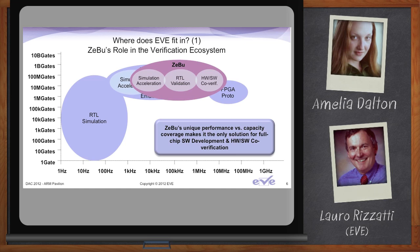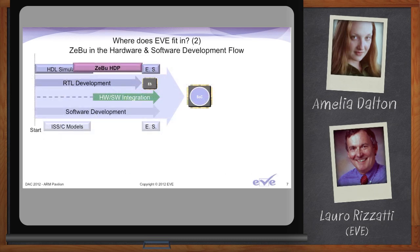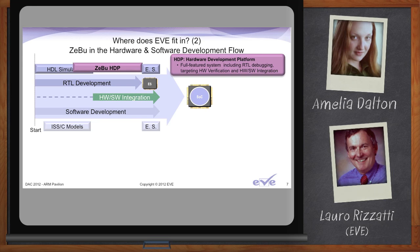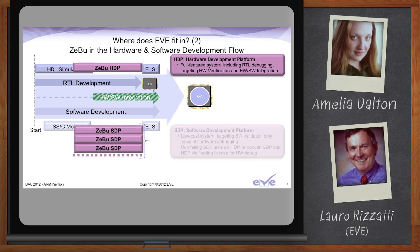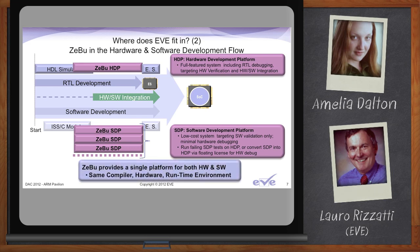A lot of people assume that emulation is just for debugging hardware. Emulators are expensive machines, but Zeebo plays a big role in both hardware and software development. We differentiate the emulator into two packages: HDP, the Hardware Development Platform, which provides the entire suite of capabilities including hardware debugging at full price; and SDP, the Software Development Platform, which removes hardware debugging capabilities, targeting software development at 50% the price of the HDP. Typically we bundle one HDP with two to four SDPs, and this has been very successful in the marketplace.